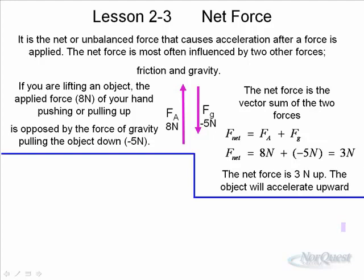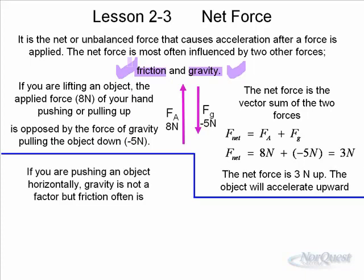That's lifting an object, and when you lift, you lift against the force of gravity. When you slide an object across a table, you're not sliding against the force of gravity — you're sliding against the force of friction. So generally, vertically we deal with gravity, and horizontally we have to contend with friction. Gravity is the opposing force vertically, and friction is the opposing force horizontally. If you're pushing an object horizontally, gravity is not a factor, but friction often is.